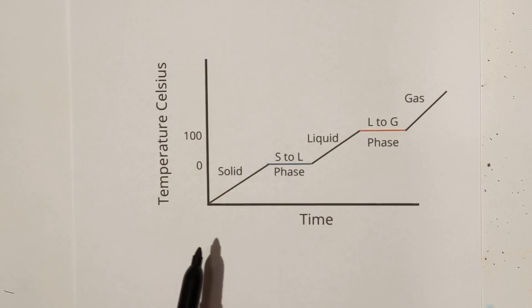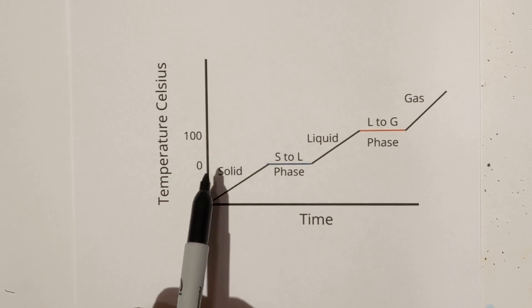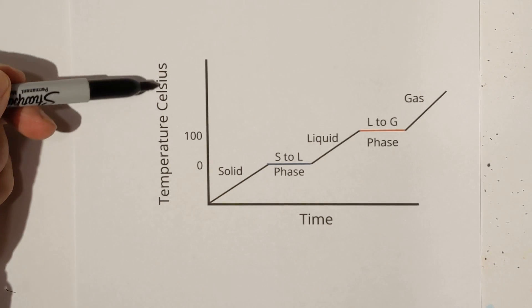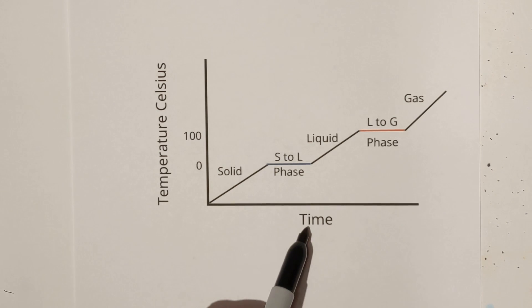Welcome to Moomoo Math and Science. In this video let's look at heating and cooling graphs. Let's first begin to look at the graph. We have temperature in Celsius on the y-axis and then we have time on the x-axis.